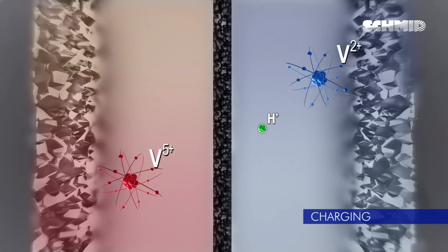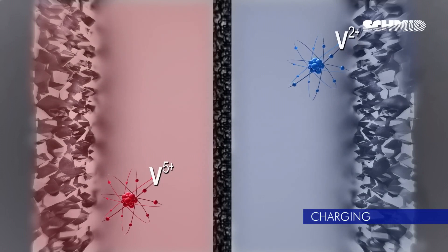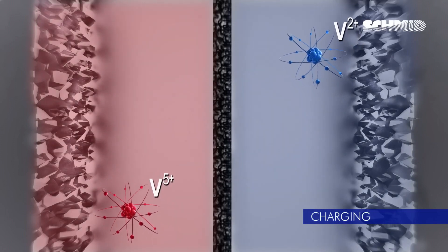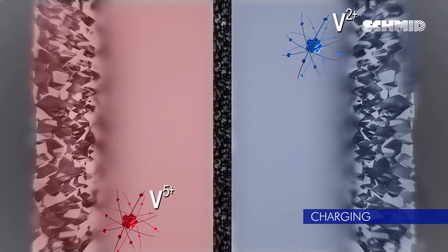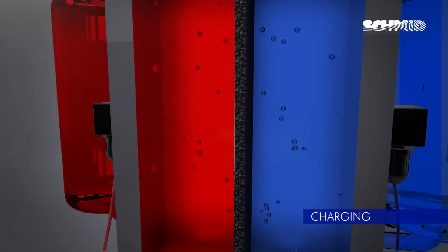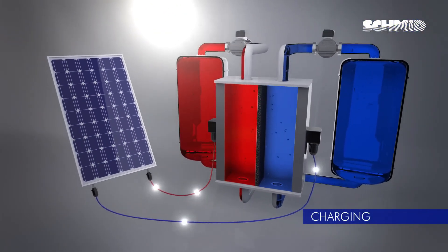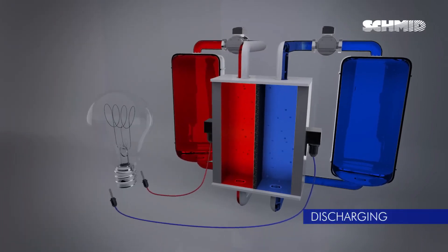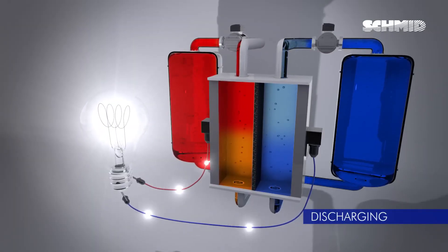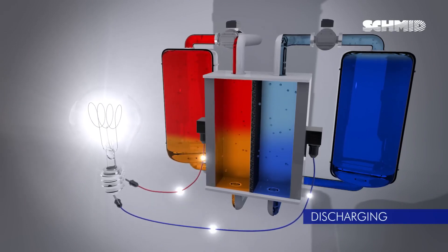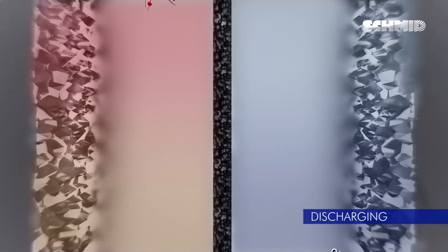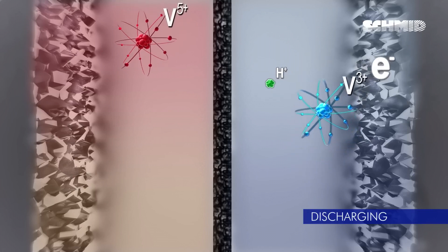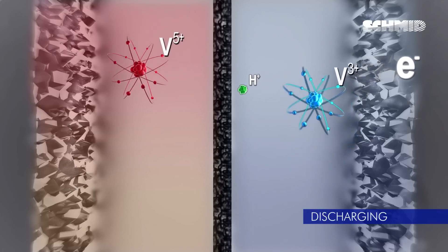During charging, the electrolytes pass through the separator at the battery's center. As they pass through the separator, the electrolytes exchange ions in the redox reaction process. Vanadium on one side gets oxidized, loses electrons, while on the other side it gets reduced, gains electrons. Energy is stored in this process. During discharge, the process is reversed. The redox reaction causes vanadium ions to exchange through the separator in the opposite direction, generating an electric current that can power a device.